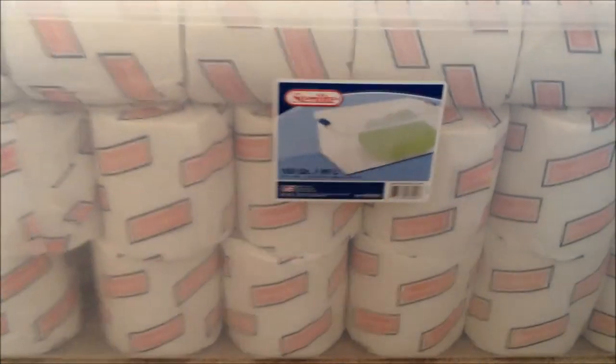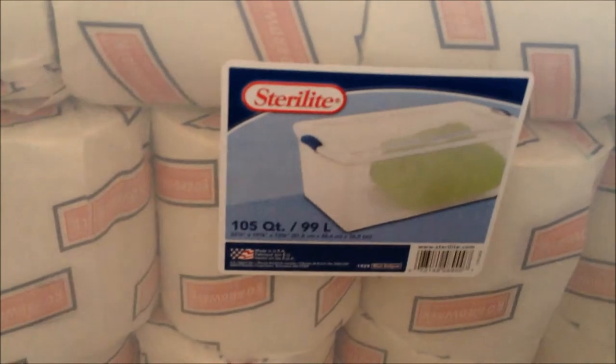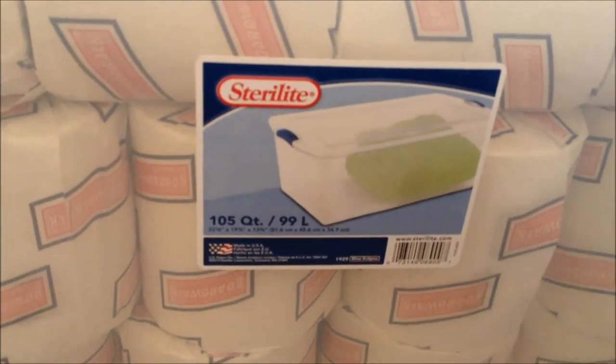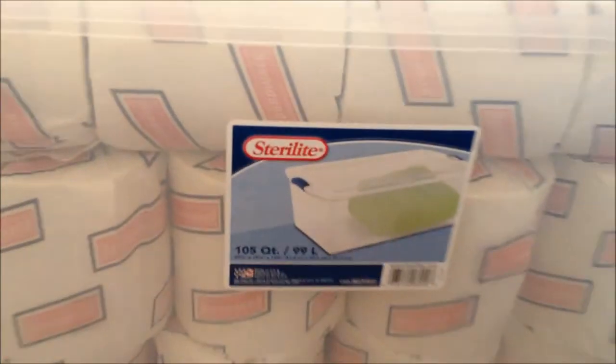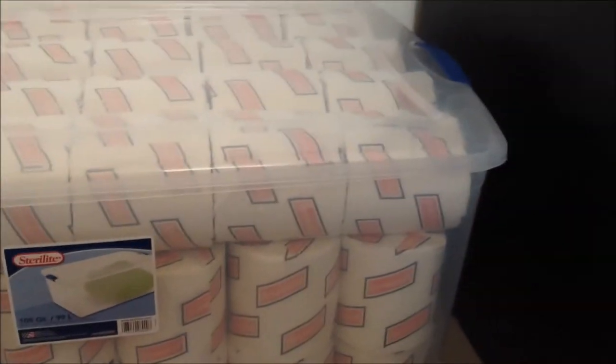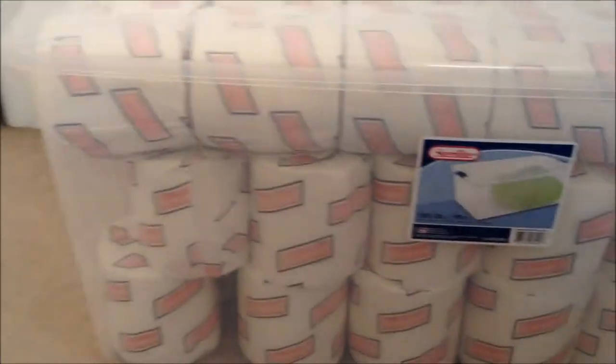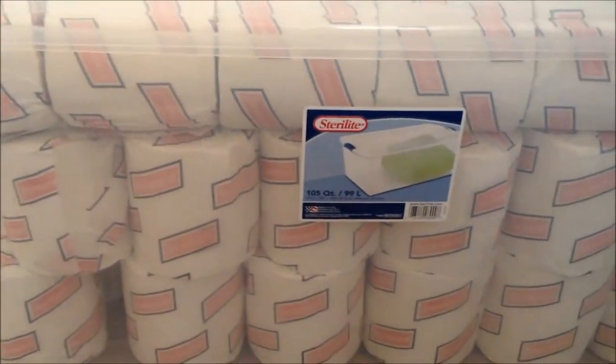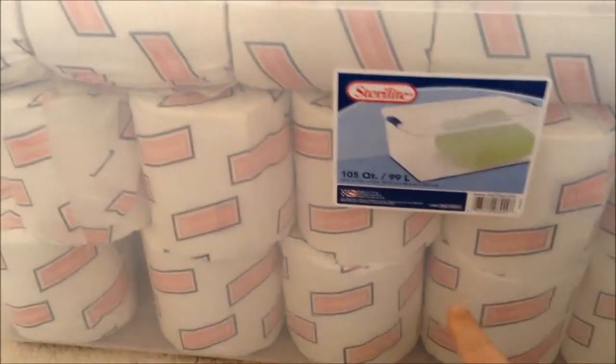In case anybody's wondering, in a 105-quart container which I got at Walmart, clear so I'd like to store things in clear containers so I know what's in it, you can get 72 rolls of this toilet paper in this container. You've got 24 on the bottom row, 24 in the middle row, and then 24 on the top.